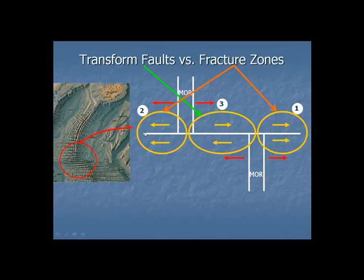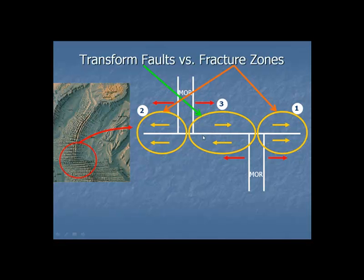Notice it's the same feature — here a fracture zone, here a transform fault, and here a fracture zone. In terms of which ones are plate boundaries: is number one a plate boundary? No, because it's a fracture zone — it's really the same plate on either side. Number two — is that a plate boundary? No, it's also a fracture zone; it's within a plate. Is number three a plate boundary? Yes, that's a transform fault type plate boundary. That's the only part here that's a plate boundary.